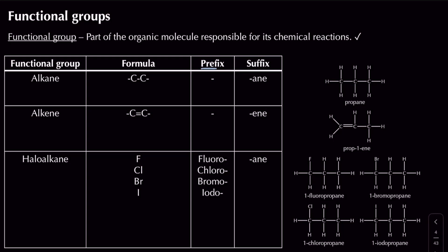When it comes to naming conventions, we use a prefix at the start, a suffix at the end, and a stem in between. The stem depends on the number of carbon atoms: one is meth, two is eth, three is prop, and four is but — the four from GCSE. At A-level we go all the way up to ten. Alkanes end in '-ane'; alkenes end in '-ene'. Haloalkanes still end in '-ane' because they're an alkane with a halogen attached.